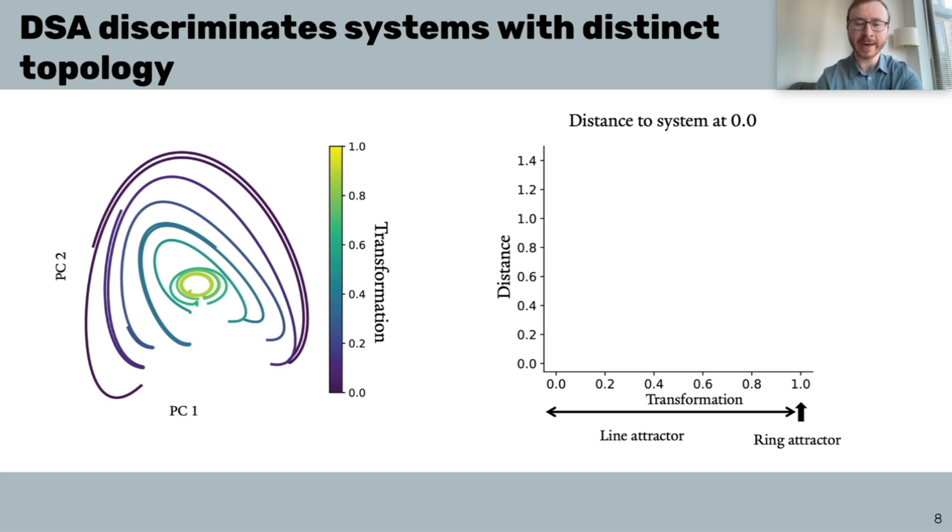As before, we compared the system at different parameter values to the smallest value, and here we found that unlike Procrustes, DSA only jumps up away from 0 when the parameter is close to 1, or the ring closes.